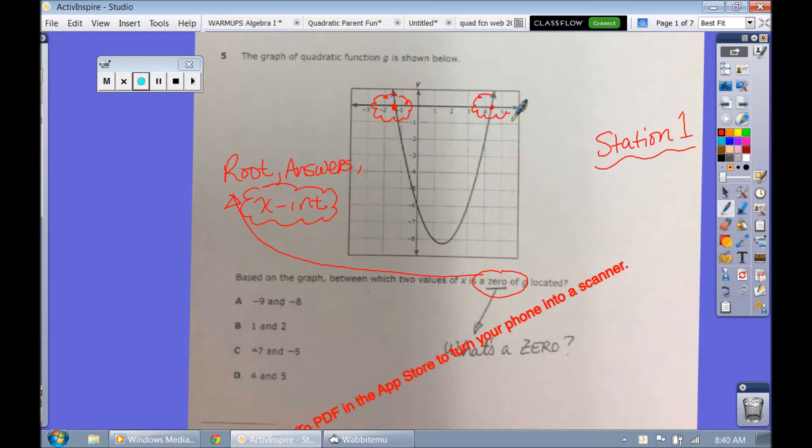So now all we have to do is just look and see which answer choice is true. So, did we have any of the graph cross the x-axis between negative 9 and negative 8? That's way over here. Did the graph cross over there? No. What about between 1 and 2? Did the graph cross between 1 and 2? Doesn't look like it to me. That looks like the axis of symmetry. What about between negative 7 and negative 5? No, that would still be on the extended blue line. There's no crossing of the graph.